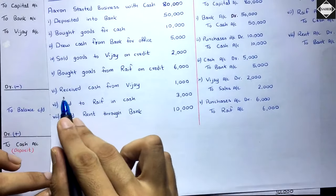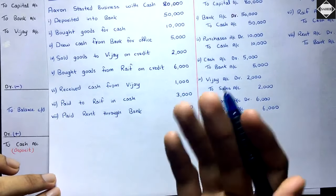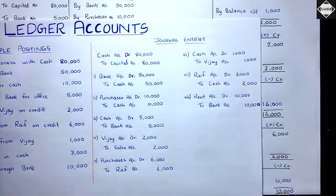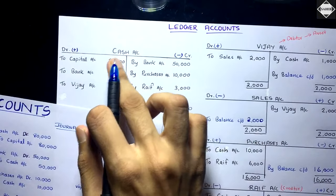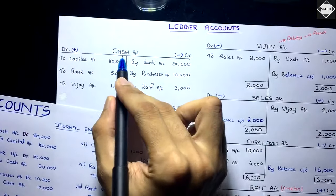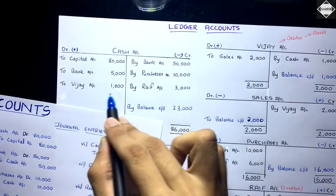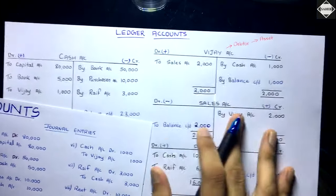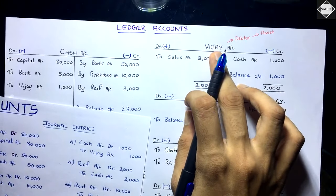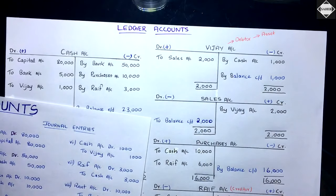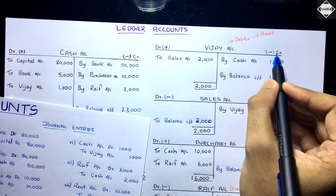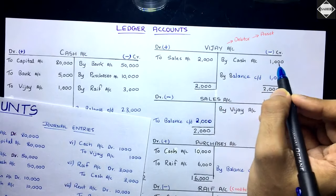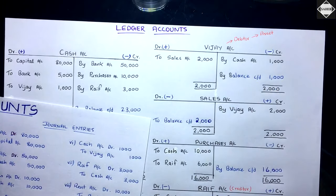Next: received cash from VJ 1,000. Journal entry: Cash Account debit, to VJ Account 1,000. In the Cash Account, cash is increasing because we received money from VJ, so: Cash Account debit, to VJ Account 1,000. Then in the VJ Account — VJ is our asset and he paid us money, so our asset is decreasing. VJ Account credit, by Cash Account 1,000.